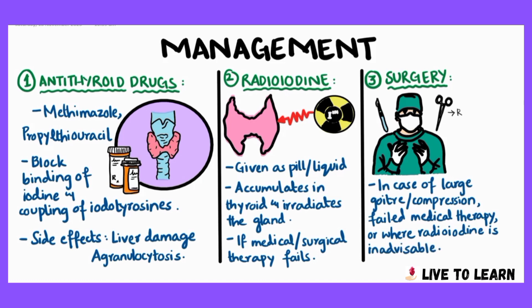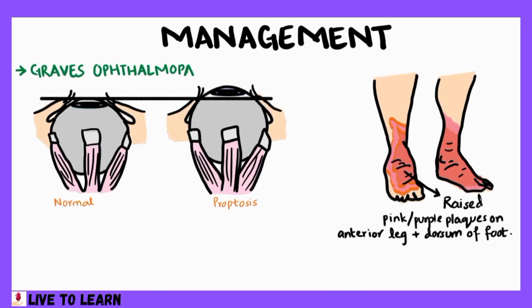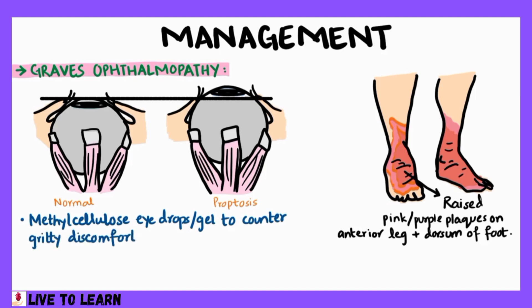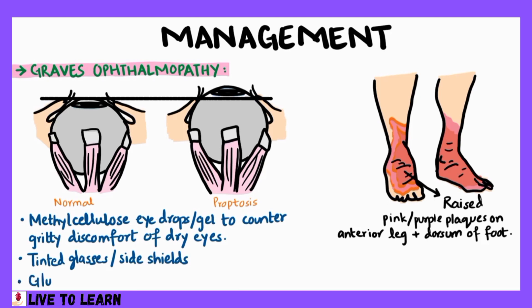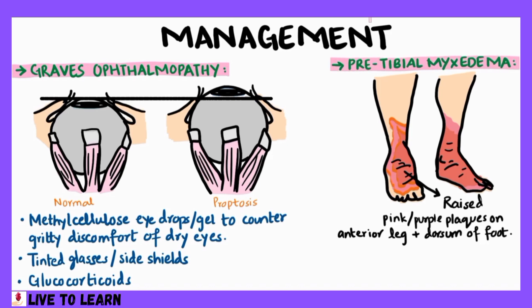Risks associated with surgery include recurrent laryngeal nerve damage, hematomas, hypoparathyroidism, and infections. For treating Graves' ophthalmopathy, methylcellulose eye drops or gel are prescribed to counter the gritty discomfort of dry eyes. Tinted glasses or eye shields attached to spectacle frames reduce the excessive lacrimation triggered by the sun or wind. Infiltrative dermopathy, or pretibial myxedema, occurs in fewer than five percent of patients with Graves' disease. Treatment is rarely required, but in severe cases topical glucocorticoids may be helpful.